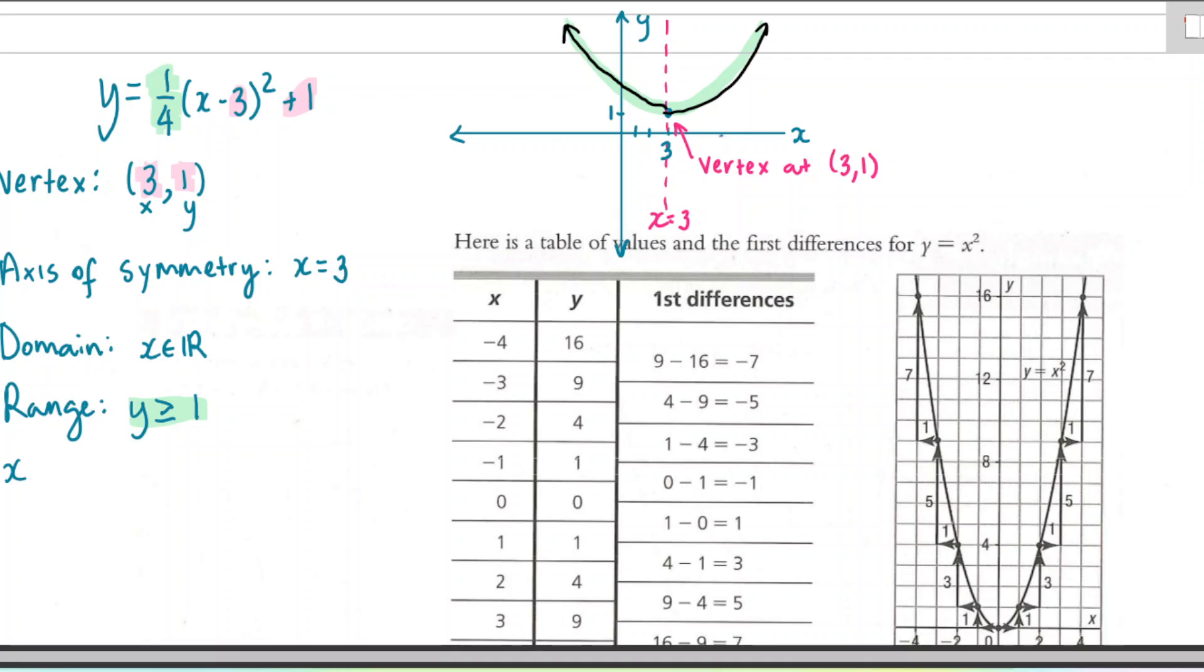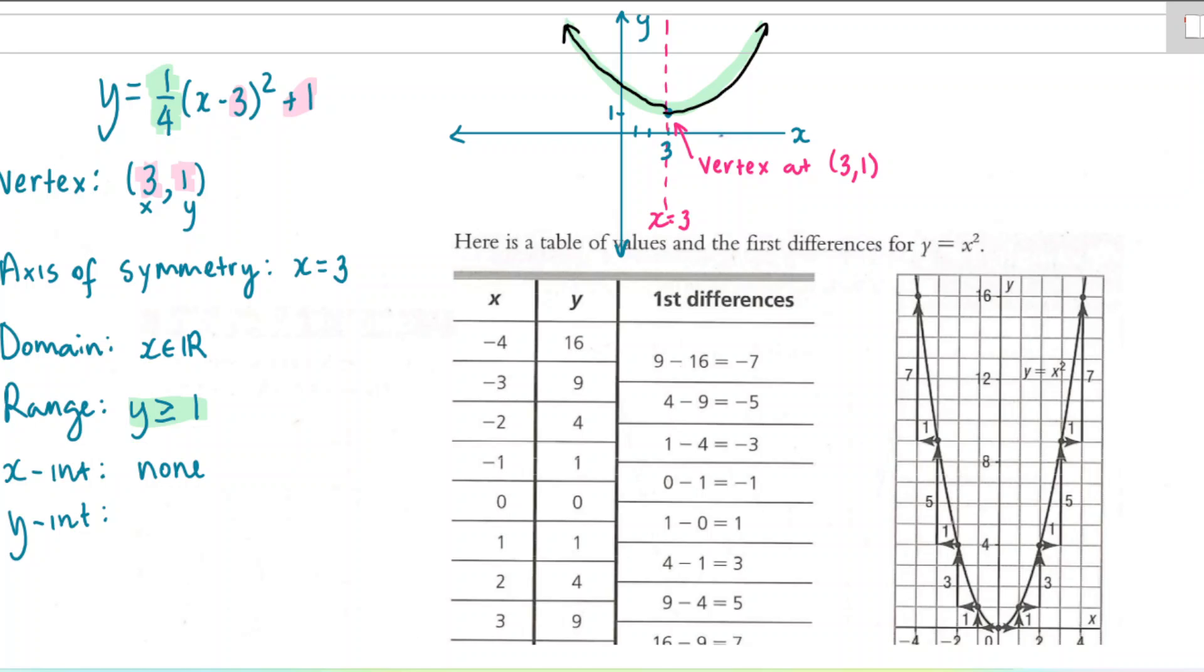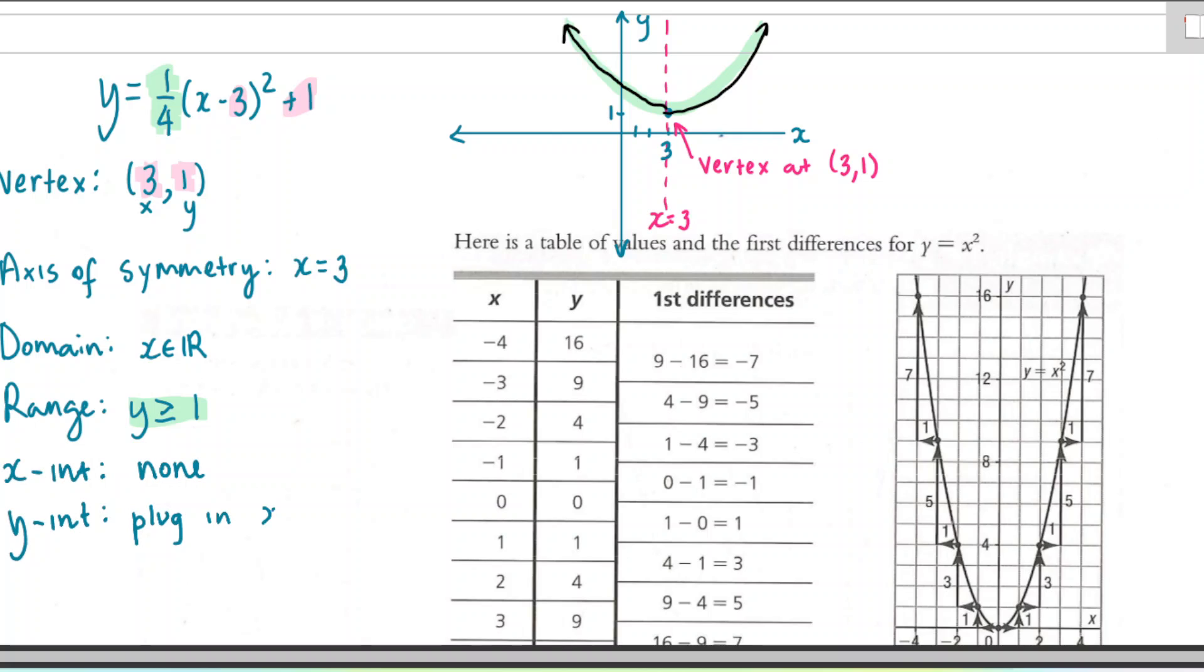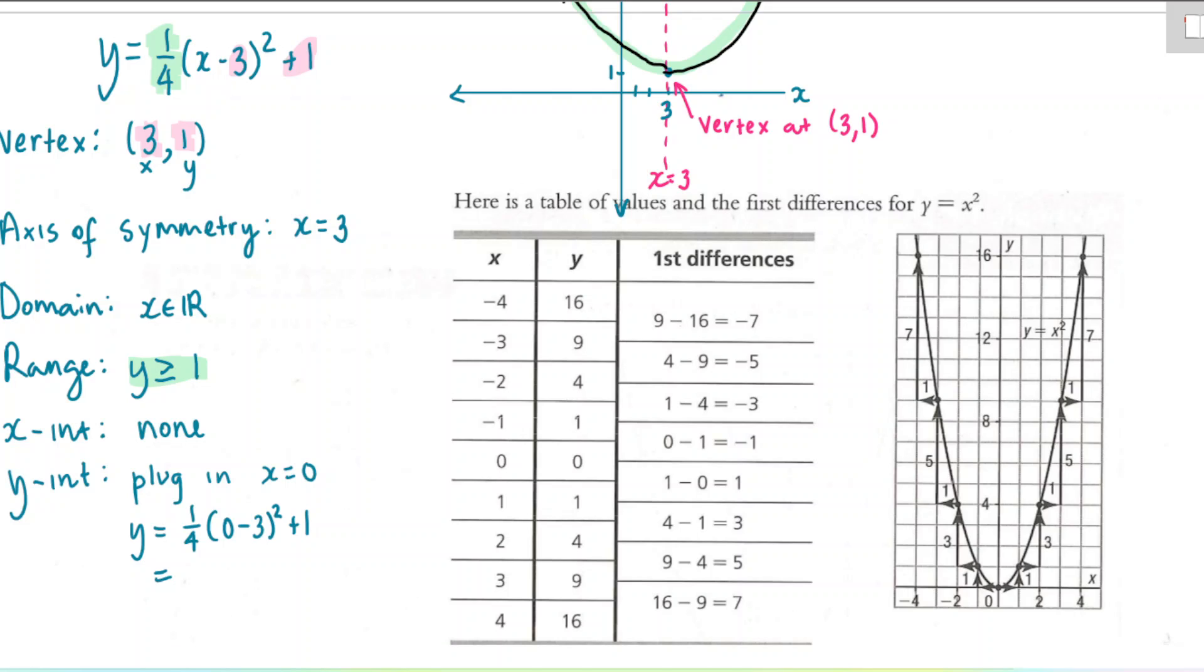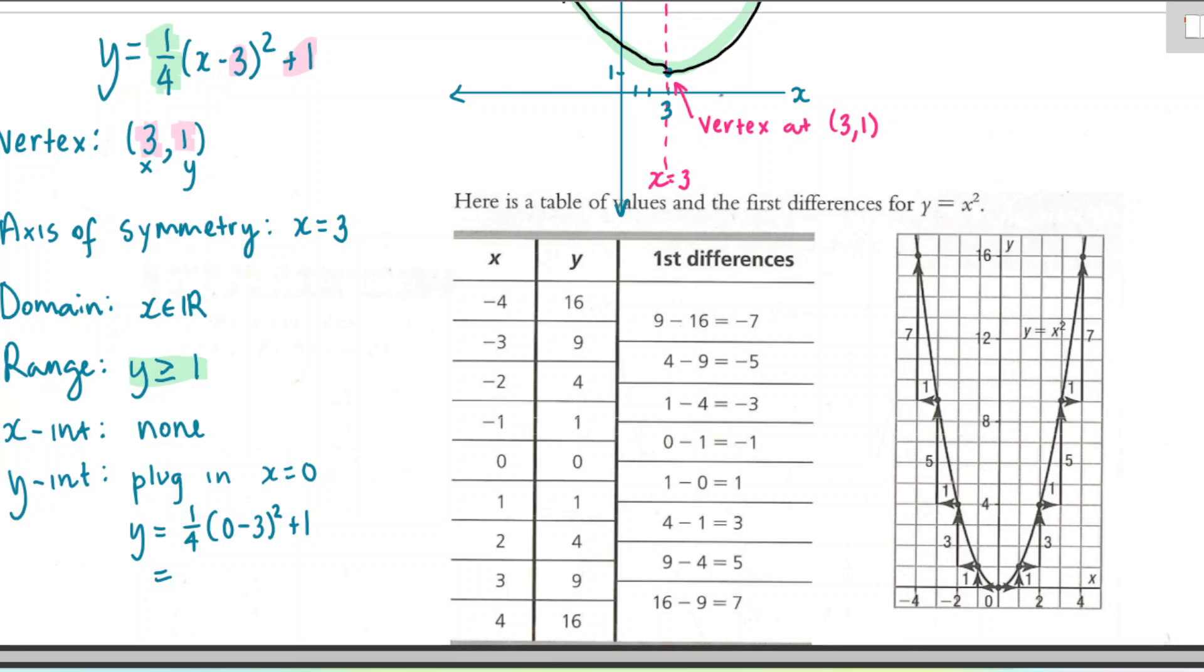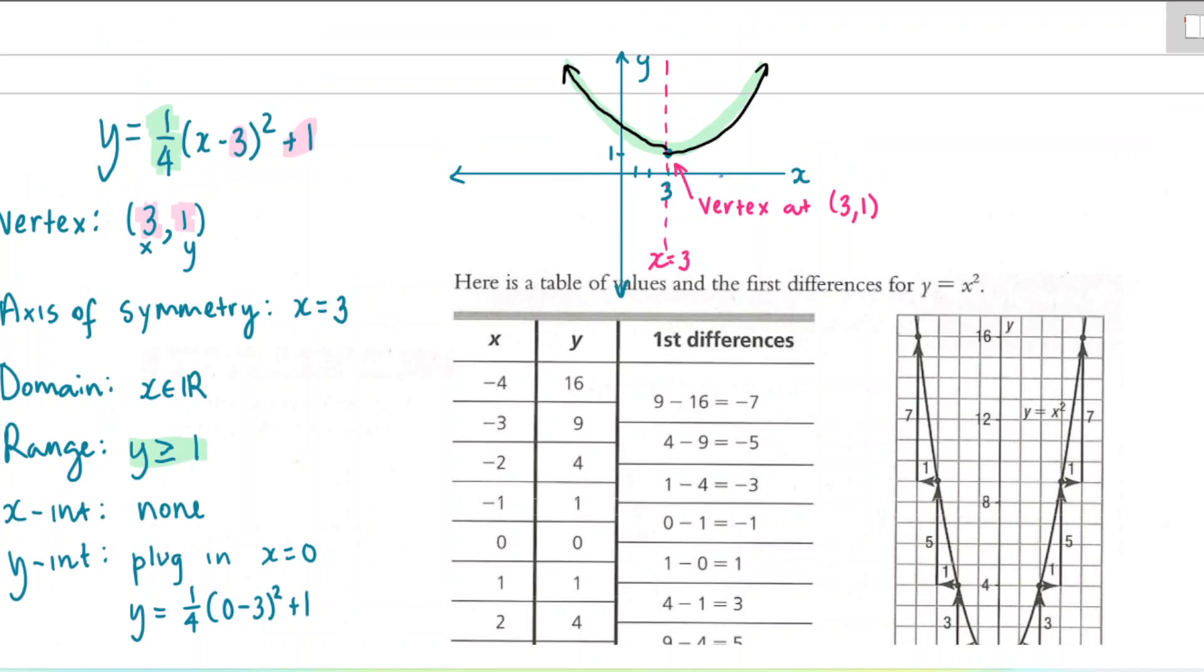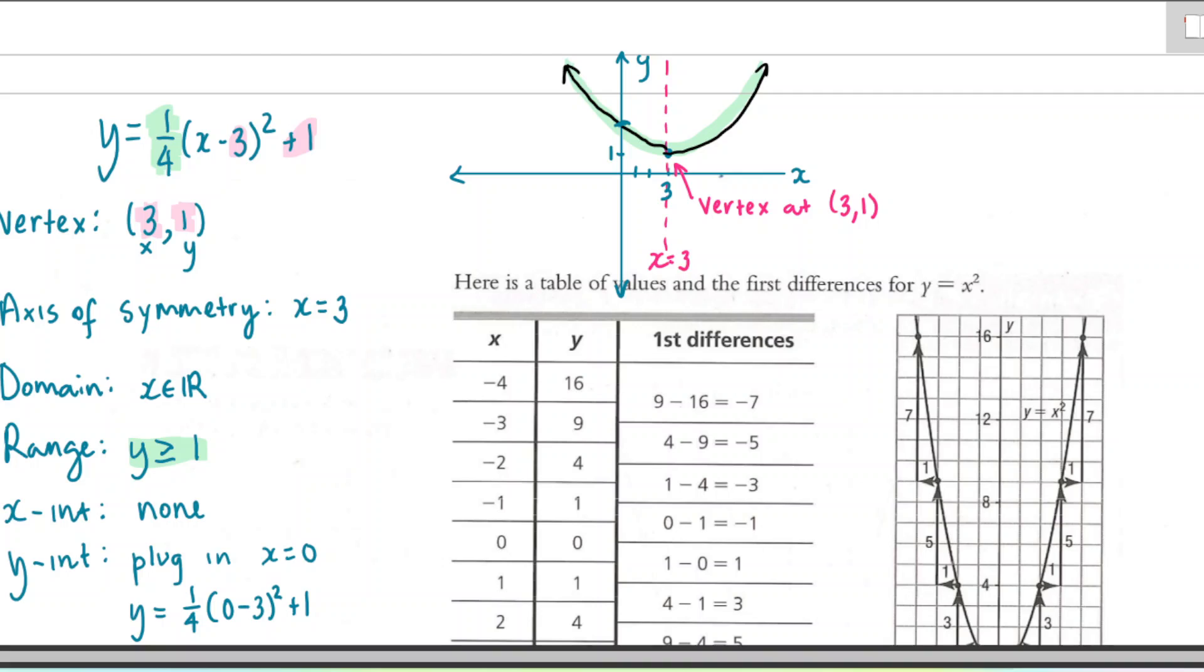And then the intercepts. The x-intercepts, because this entire graph is above the x-axis, there are none. For the y-intercepts, we can't see them directly from this equation format. That's one downside to the standard form equation is you can't easily tell what the intercepts are. But what you can do is plug in x equals 0 into the equation, and you can calculate what the y-intercept will be. So here, we'll plug in, because at the y-intercept, the x is actually equal to 0, minus 3 squared plus 1. So this is 9 divided by 4, which is 2.25, plus 1, which is 3.25. So the y-intercept is 3.25. So we could label that on our graph. We could just put a little arrow here, y-intercept at 3.25.